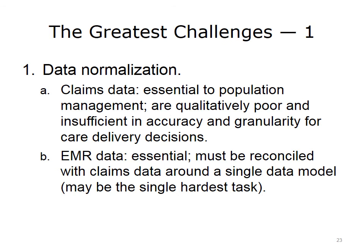The greatest challenges in having an IT-supported population health strategy begin with data normalization. Claims data is essential to population management, but claims data are often qualitatively poor and insufficient in accuracy and granularity for care delivery decisions. A claim may indicate a patient has diabetes, but on further review, diabetes was coded incorrectly. So while claims data is helpful at the population level, before individual intervention is launched, it's important to do real clinical screening with patients. EMR data is therefore essential, and to the extent that claims data and EMR data can live in a consistent population database, that helps validate claims data and diagnoses.